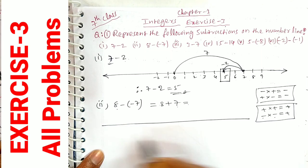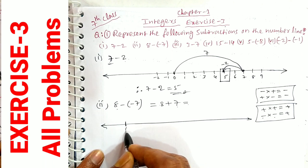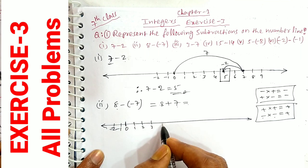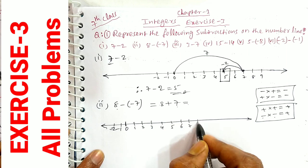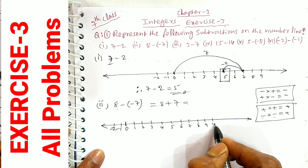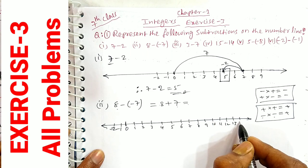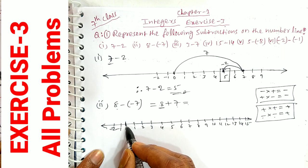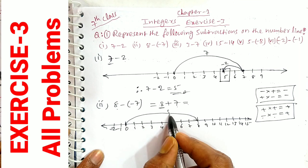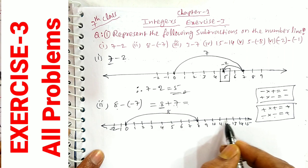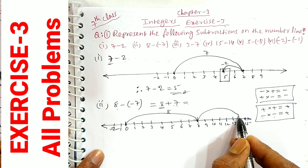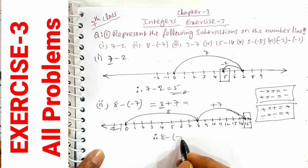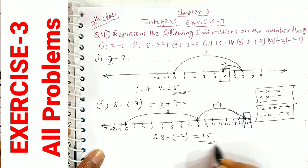On the number line starting from 0, right side goes 1, 2, 3, 4, 5, 6, 7, 8, 9, 10, 11, 12, 13, 14, 15. We start at 8, then move 7 steps forward — that gives us 15. Therefore, 8 minus (-7) is equal to 15 is the answer.